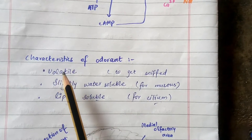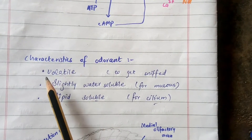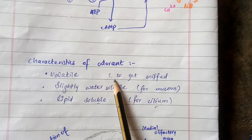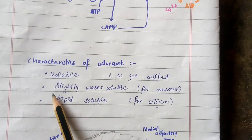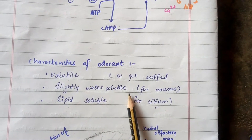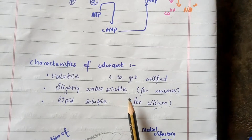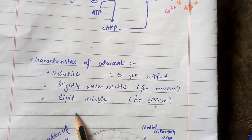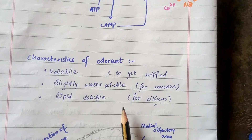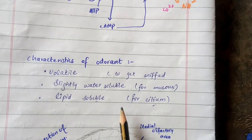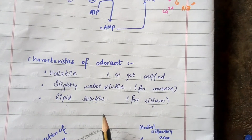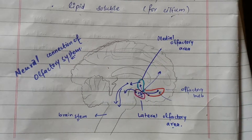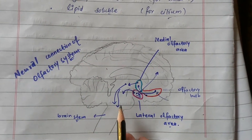To excite the olfactory cell, the odorant should have the following characteristics: it should be volatile so that it can be sniffed into the nostrils; it should be water-soluble so that it can pass through the mucus of the olfactory cells; and it should be lipid-soluble so that it can penetrate the lipid bilayer of the olfactory cells to stimulate them.